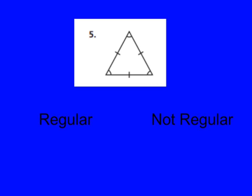For number five, you should have circled regular because all of my angles are acute. This picture shows that they all have the same degrees of angles, and all my lengths are the same — they're all labeled with one mark, which means they're all the same size. We will call this a triangle, also known as an equilateral triangle because they're all equal sides. But let's go ahead and just write down triangle because it's in the triangle family.